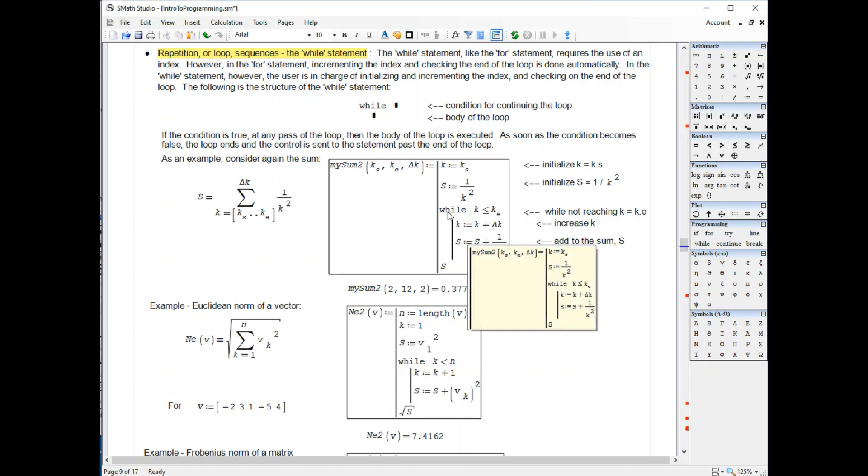When you're done with the while loop, the control is sent to the next line, which is simply the value of s. And so I'm calculating that using this, my sum 2.